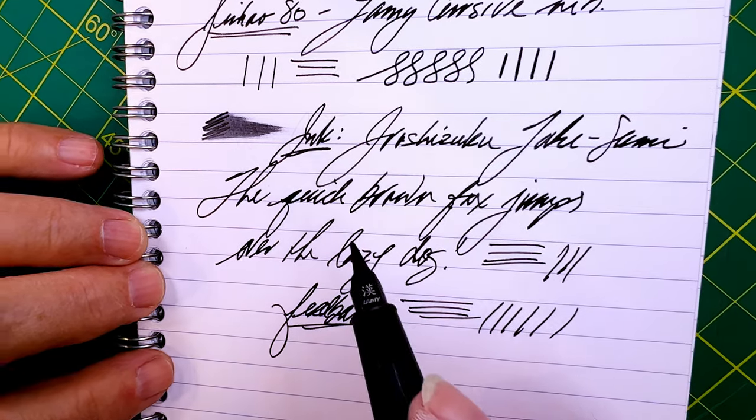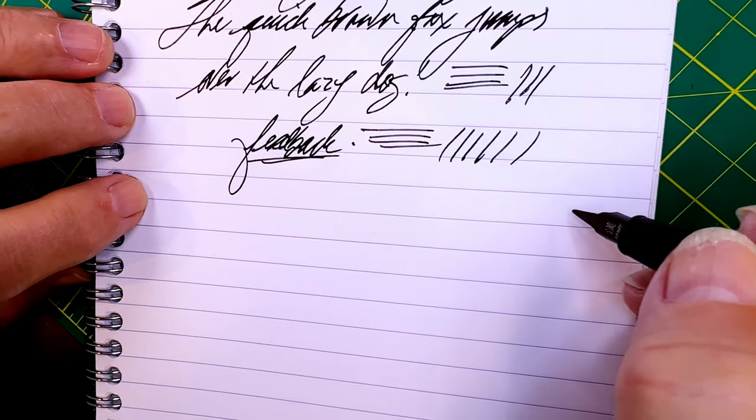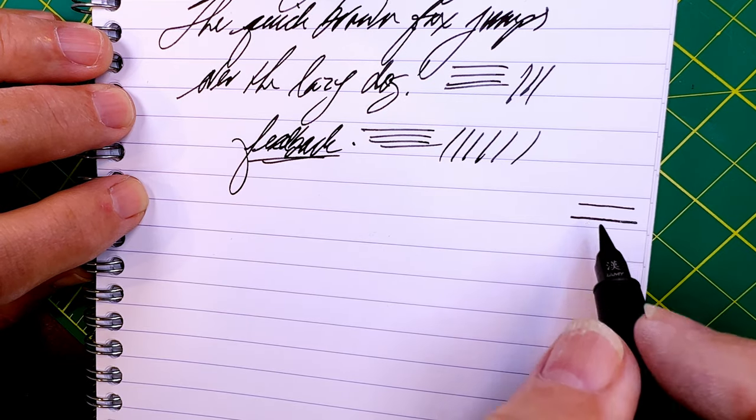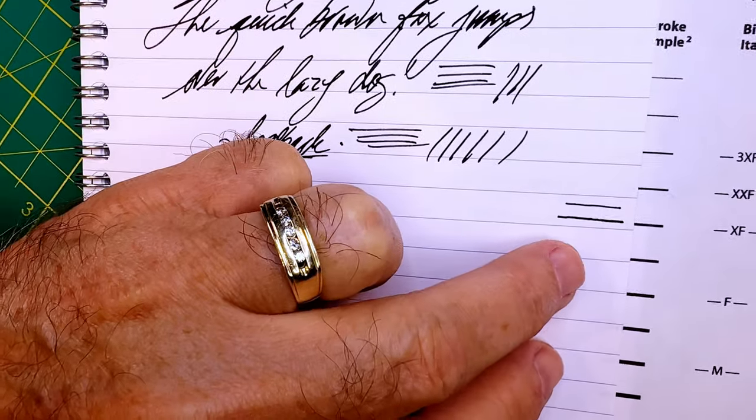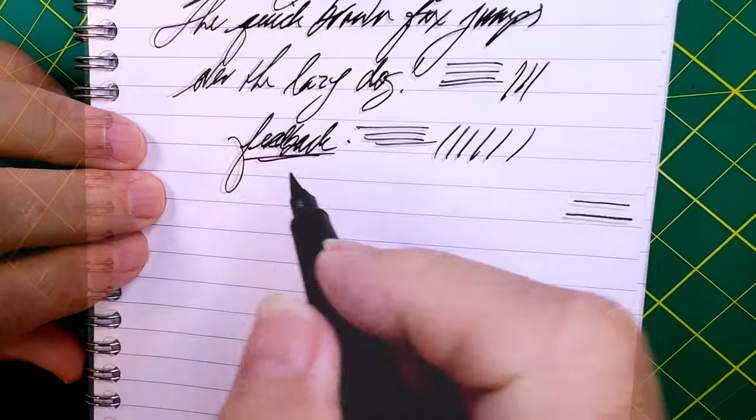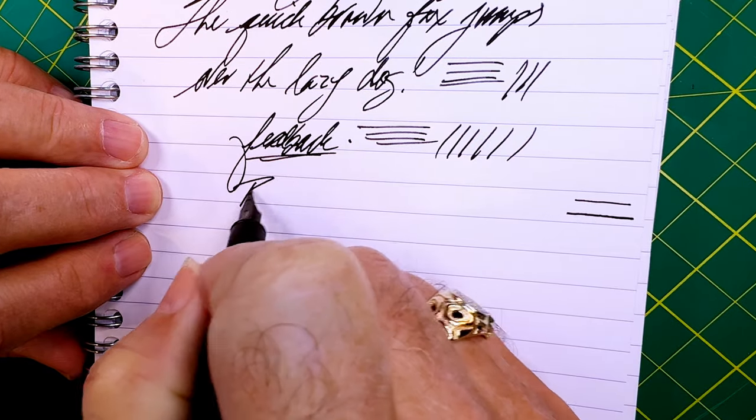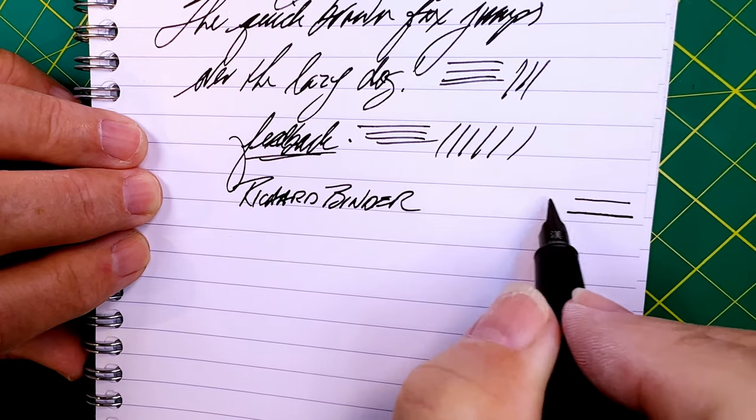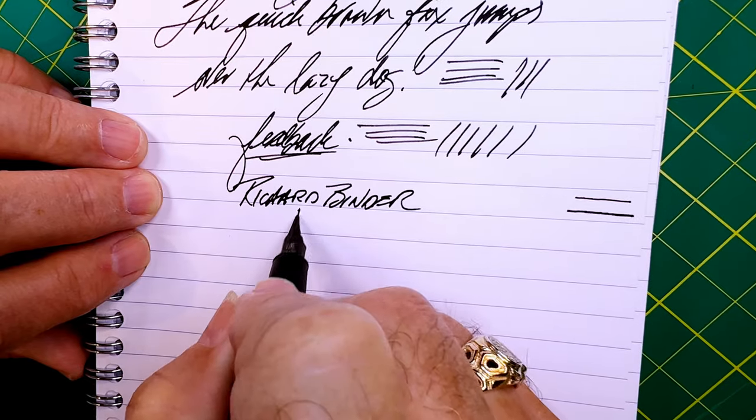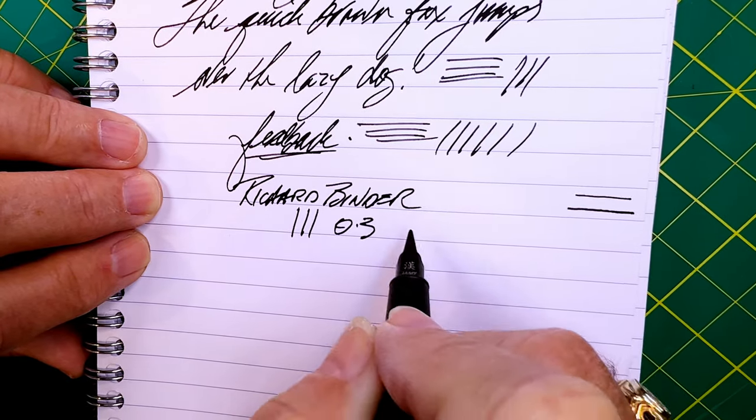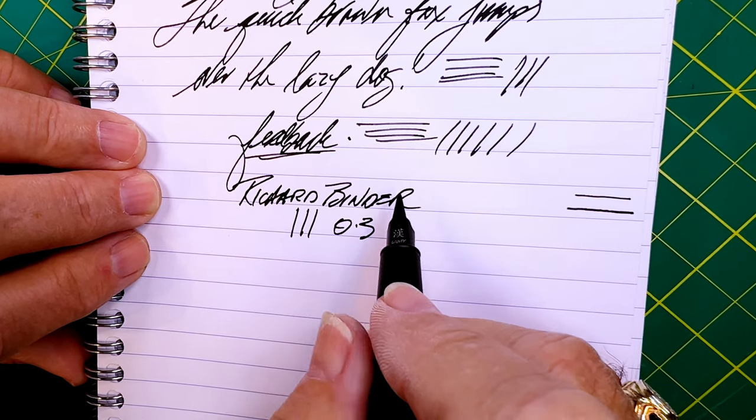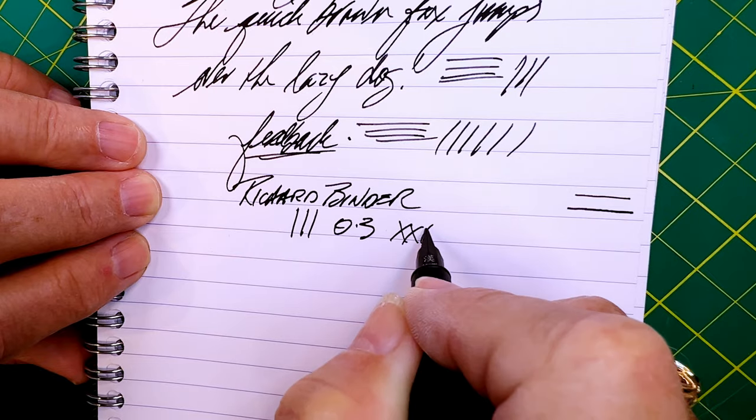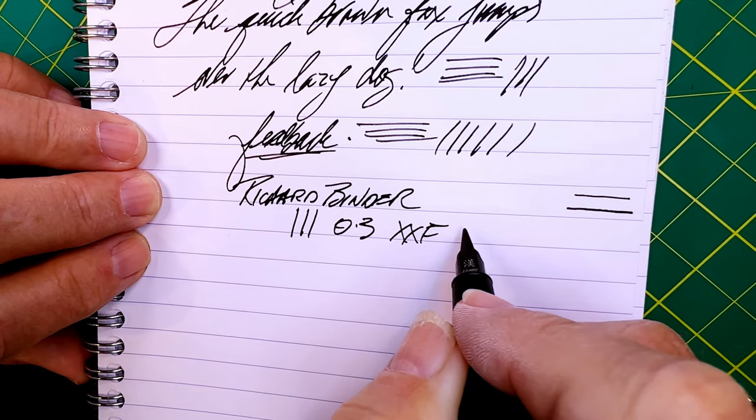And let's get the measurements on this - vertically, horizontally. So according to my Richard Binder chart, the vertical line is 0.3 millimeters in thickness, which is about a Western XXF or a Japanese XF.